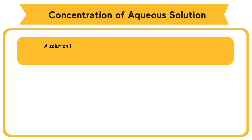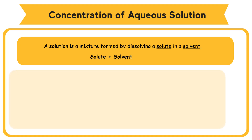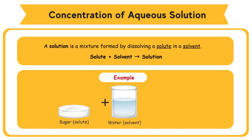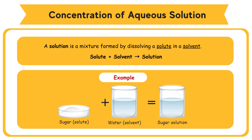A solution is a mixture formed by dissolving a solute in a solvent. For example, sugar (solute) dissolves in water (solvent) to produce sugar solution.